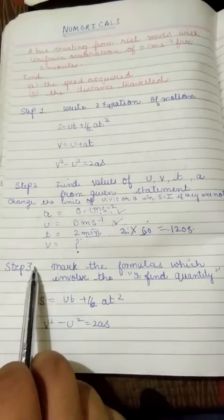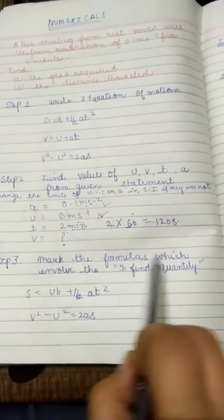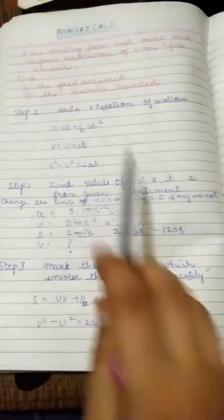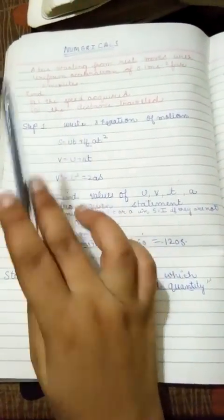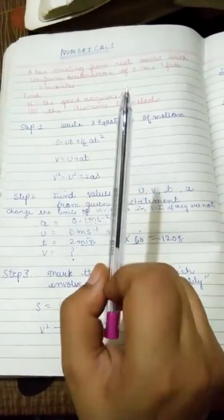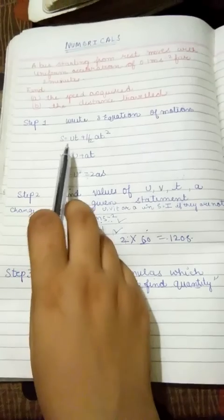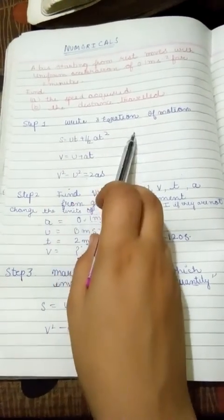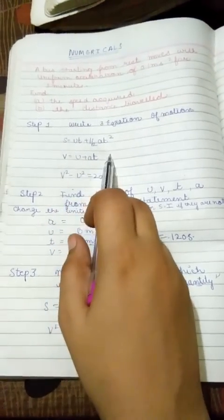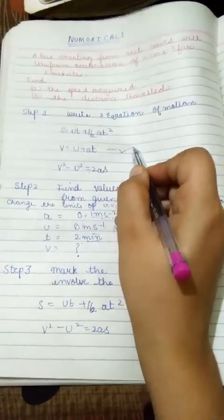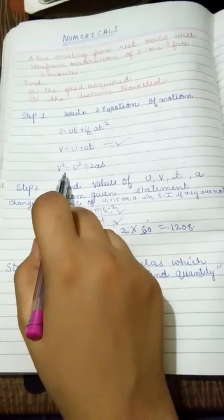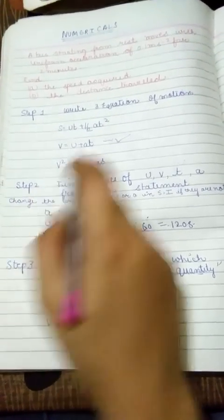Jo humara step number 3 hai, wo hai mark the formulas which involve the to find quantity. To find quantity means, what we have to find? We have to find speed. So mark the formulas which having speed, that means v. s is equal to ut plus half at square, that doesn't involve v. v is equal to u plus at, it involves v. So mark it. v square minus u square is equal to 2as. That involves to find quantity, it involves v. So mark it.